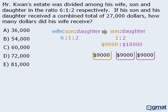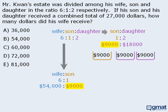At this point, if we ignore the daughter in the ratio, we see that the ratio of money the wife received to the money the son received is 6 to 1. In other words, the wife received 6 times as much money as the son. Since the son received $9,000, the wife must have received $54,000. As such, the answer is B.